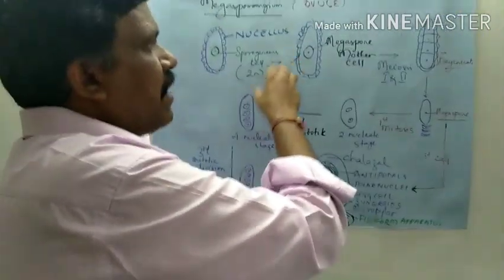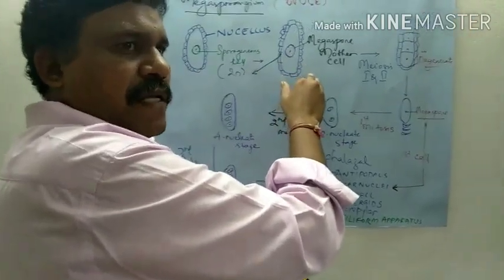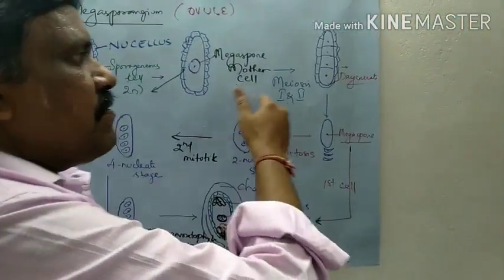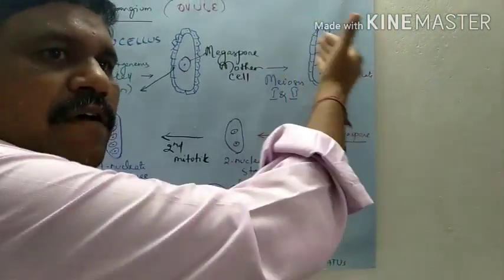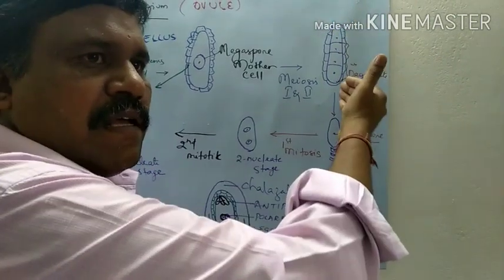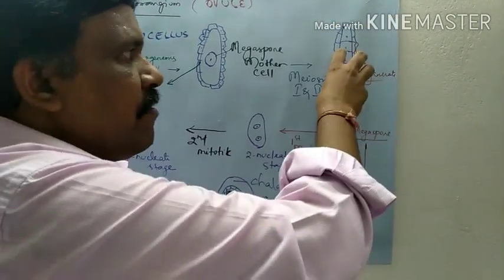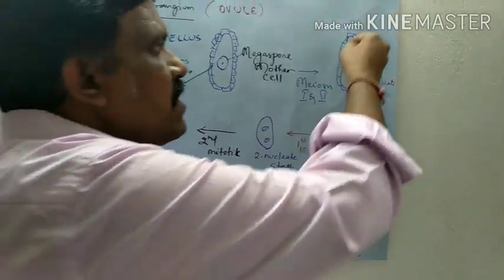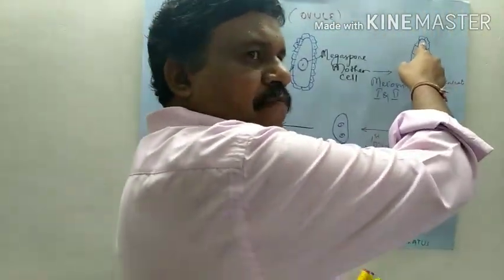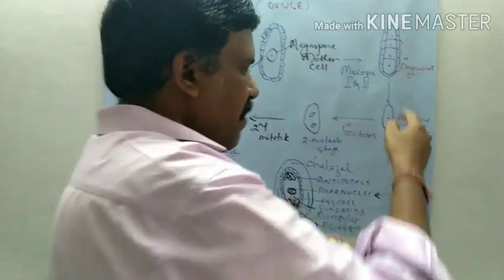The sporogenous cells undergo mitotic divisions and they form the Megaspore mother cell. The Megaspore mother cell undergoes meiosis, and at the end they form 4 cells. Out of the 4 cells, 3 cells will degenerate — only one Megaspore remains.